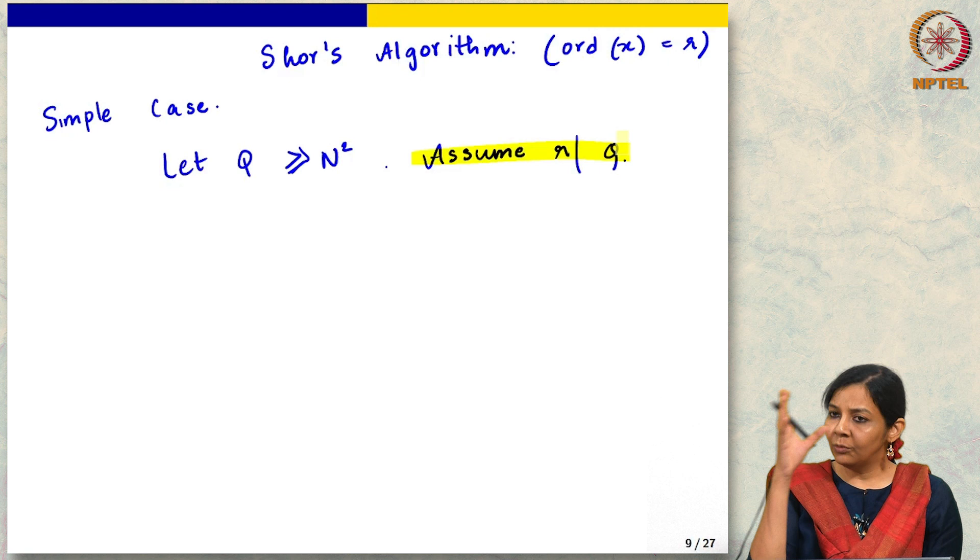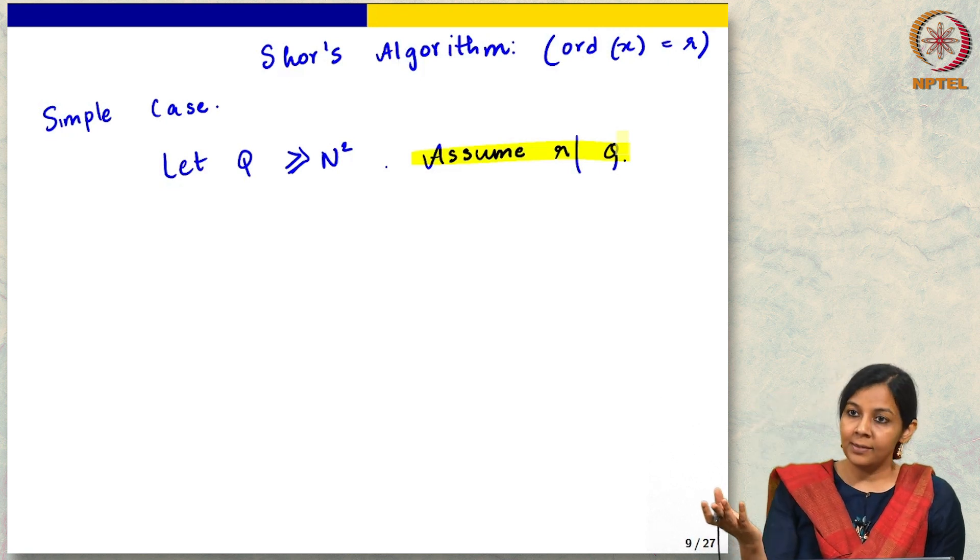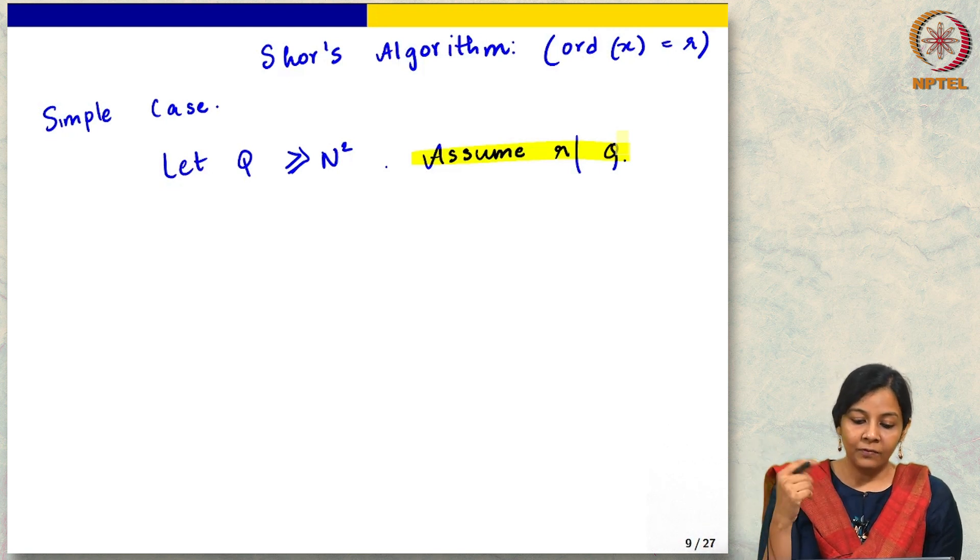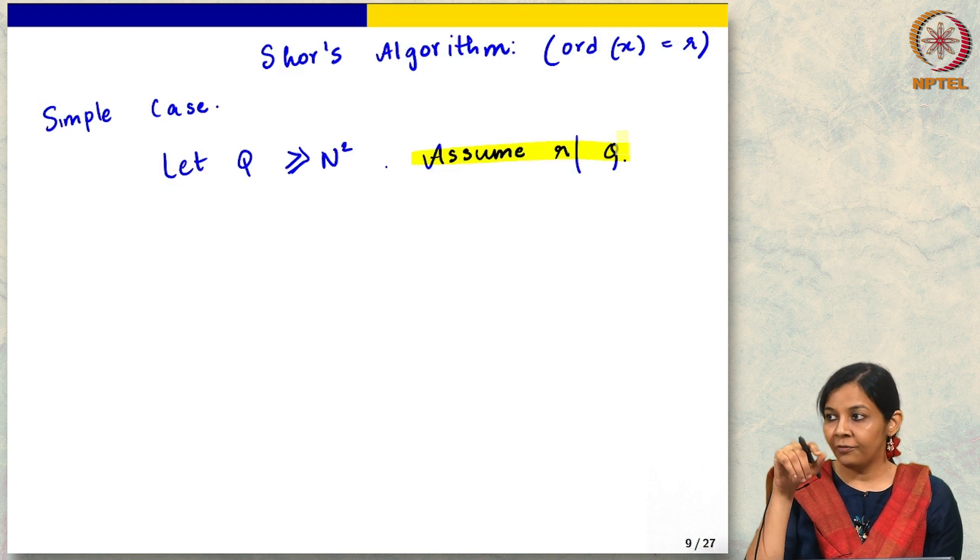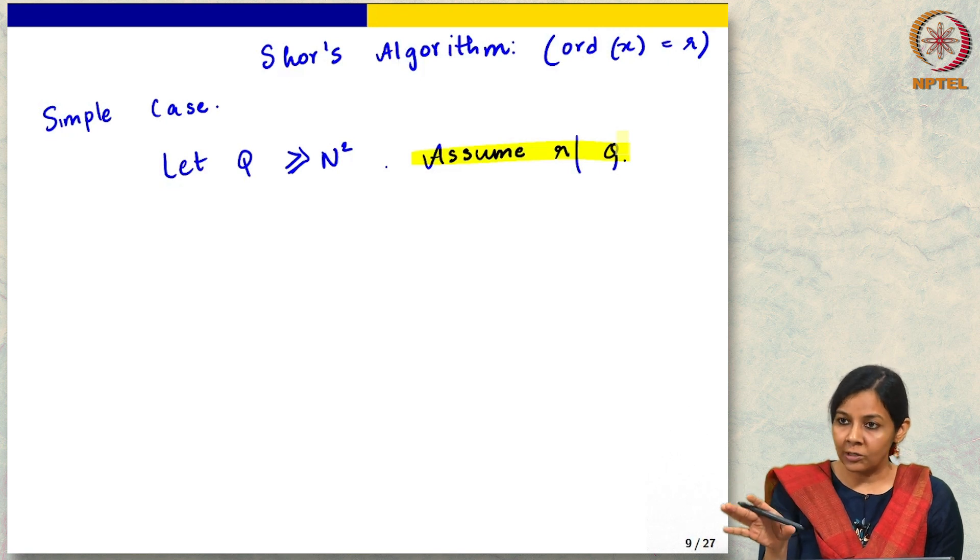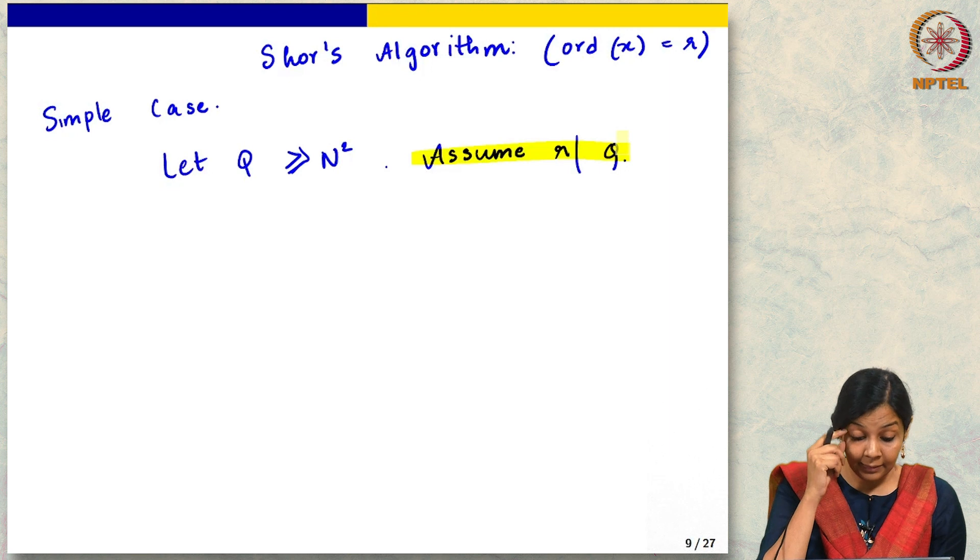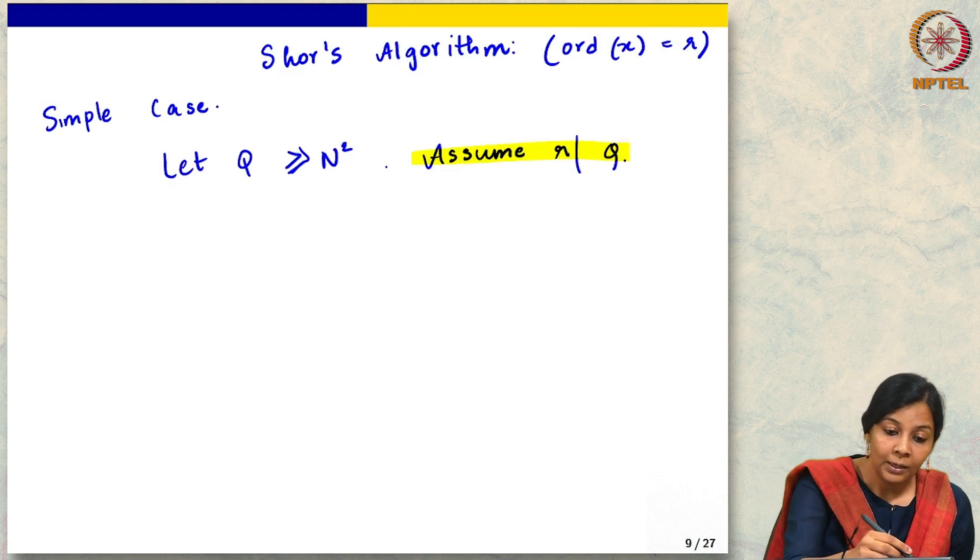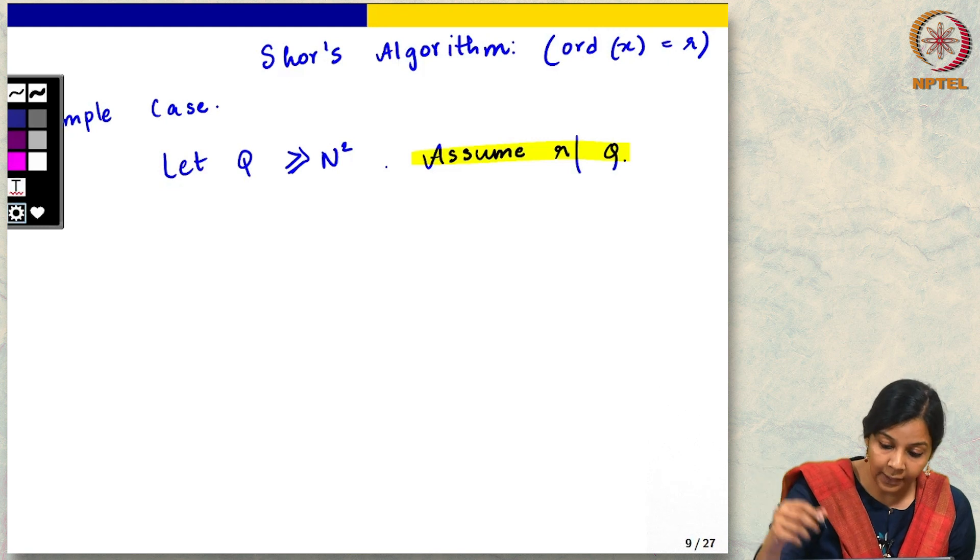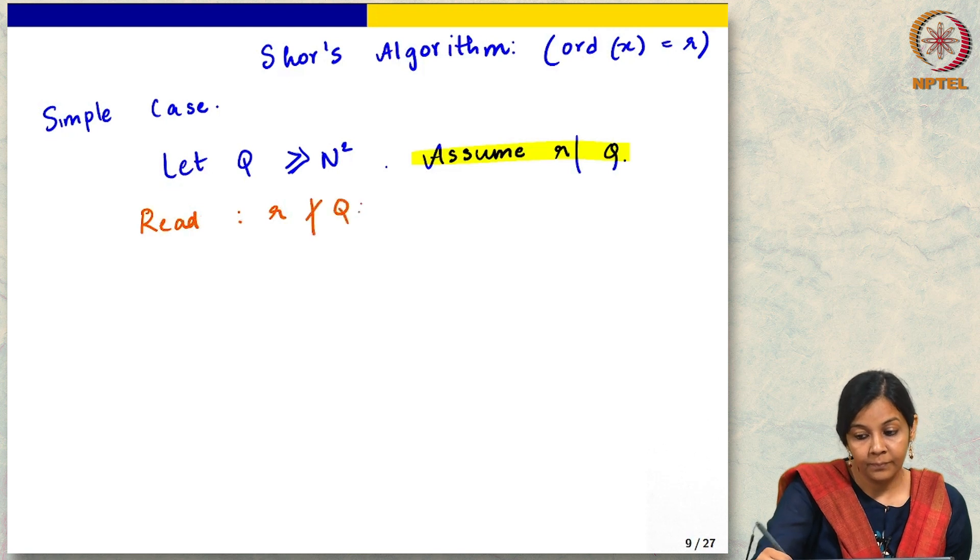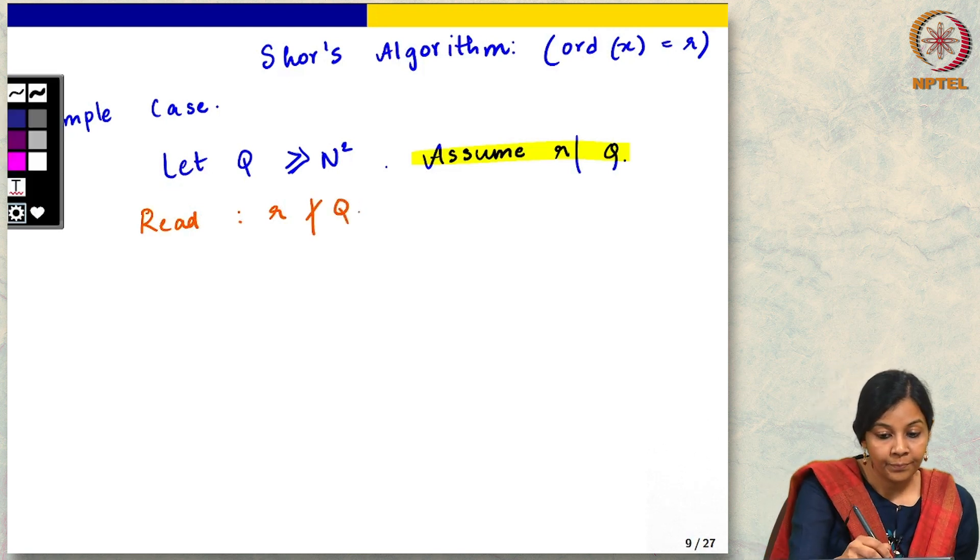But all of it can be handled. The broad outline will still stay the same; we just need to handle, instead of getting integers, we will start getting fractions which we will need to round and so on. So we will not go too much into that. We are just going to make this simplified assumption and first see the algorithm, and I leave it as a reading exercise to study the more general case where we do not make this assumption.